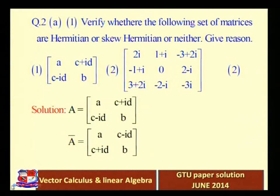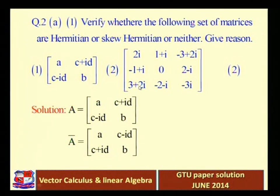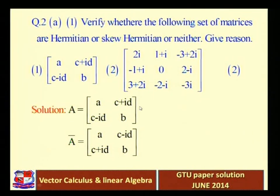Let's start with question number two. Question 2a, first part: verify whether the following set of matrices are Hermitian, Skew-Hermitian, or neither — give a reason. Here we have two matrices: one is a 2×2 matrix and the second one is a 3×3 matrix. This question was asked for two marks, so we have to check each matrix.